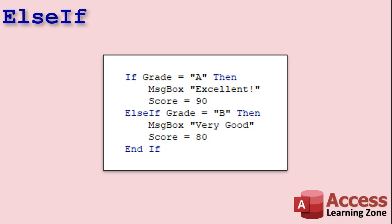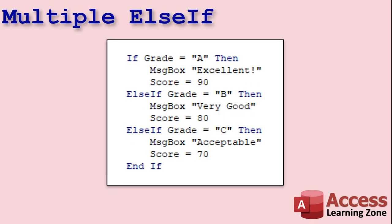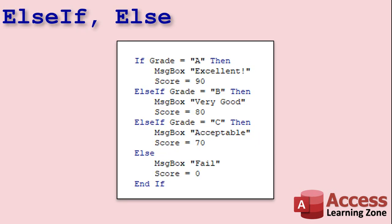We can have multiple ElseIfs inside of our statement to check for as many different criteria as we want to check for. We'll check for A: Excellent. B: Very Good. ElseIf grade is C, then message box Acceptable. And you have to say that as a very disappointed dad: Acceptable. Score is 70. And if you want to account for any other possibility, you'd put in Else after all of your ElseIfs. So you'd say if grade is A, ElseIf grade is B, ElseIf grade is C, and then anything else, if it's D, F, whatever, it's going to be message box Fail, score is 0. You don't get to pass, and you're done.